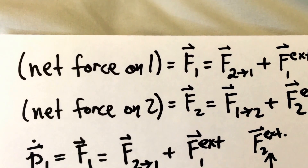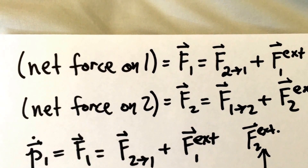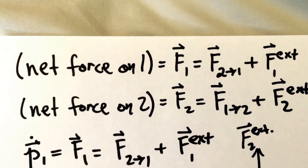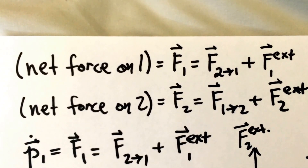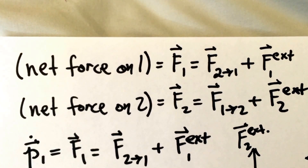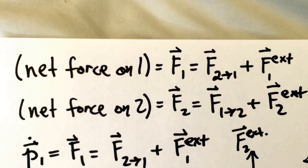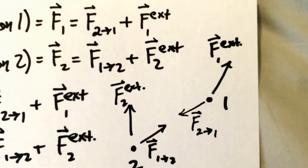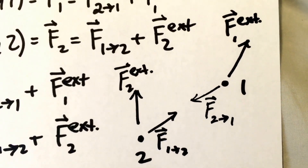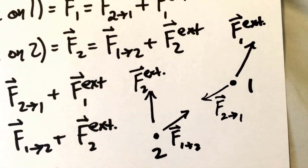Coming back to Newton's third law, we find that we can calculate the net force on particle one, F1 vector, as the force of particle two on particle one plus all external forces on particle one — anything else in the universe that influences the motion of particle one. The same is true for particle two: F2 vector is the force of particle one on particle two plus all external forces on particle two. We can think about that graphically — here are particle two and particle one, we see the forces between the two particles and then the external forces coming from the rest of the universe.